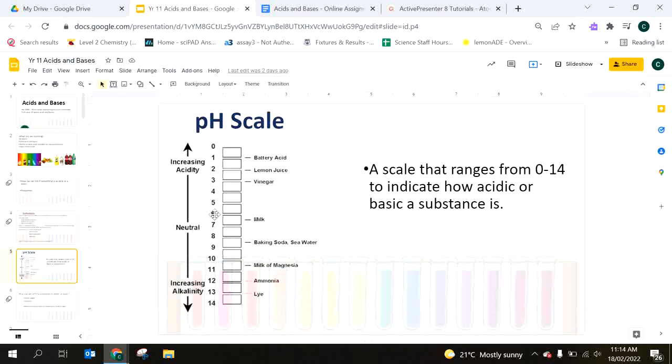Any number less than seven is acidic, and the most acidic is down at zero. So if you have something that's a pH of six, five, four, something like that, it's going to be only slightly acidic, and down here is going to be very acidic.